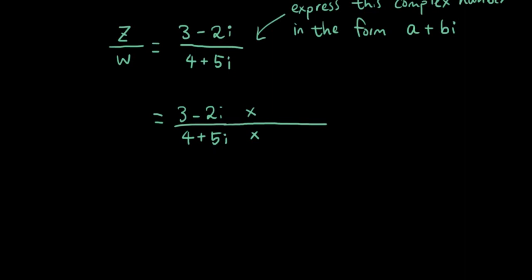So the conjugate of 4 plus 5i is equal to 4 minus 5i, because we simply reverse the sign in the middle. So if we multiply both the top and the bottom of this fraction by the conjugate of the denominator, we multiply both the top and the bottom by 4 minus 5i. Let's put this in brackets as well so we don't get confused.